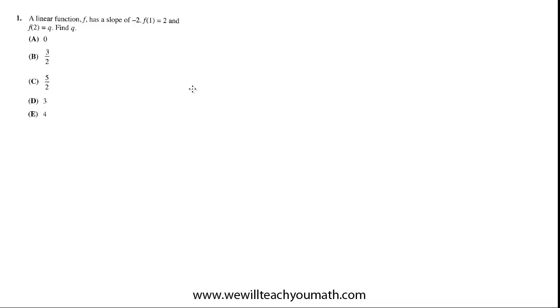Okay, first problem. A linear function f has a slope of negative 2. f of 1 is 2, and f of 2 is q. Find q. So the first time you read through a problem, don't even try to think about what they're asking — just gather the information that's given, and then read it through again and think about what they want to know.